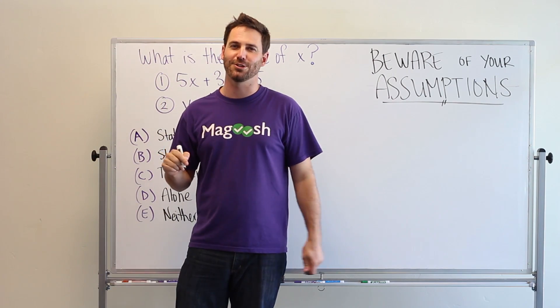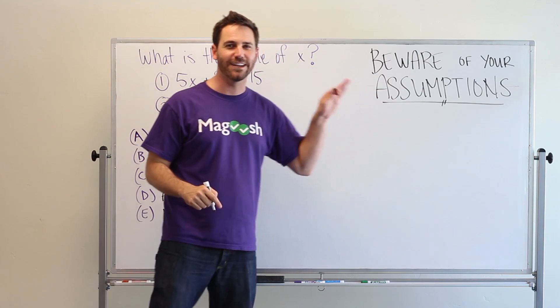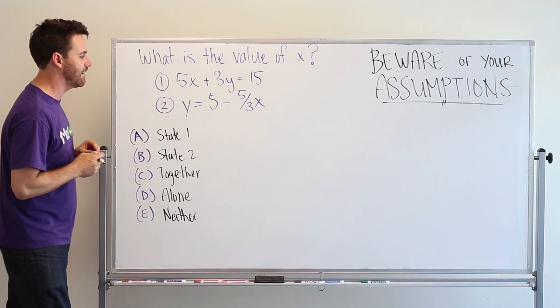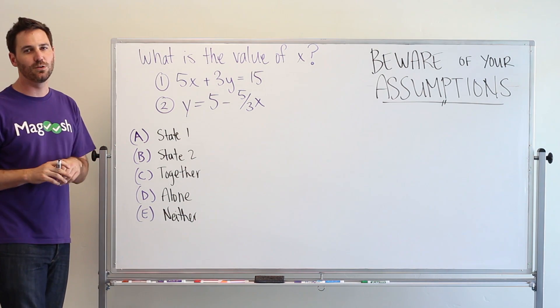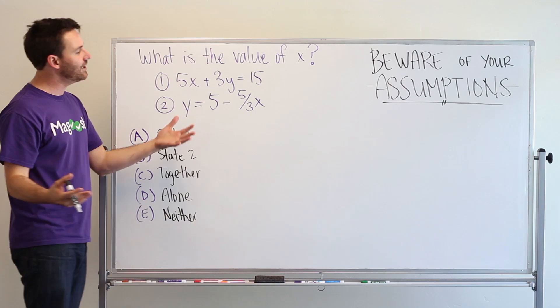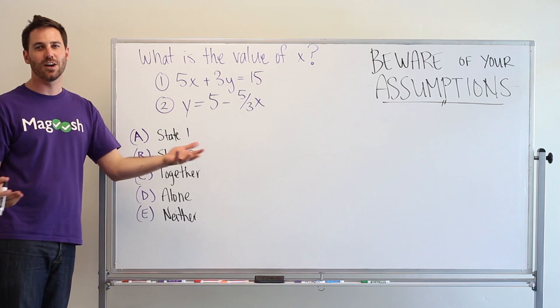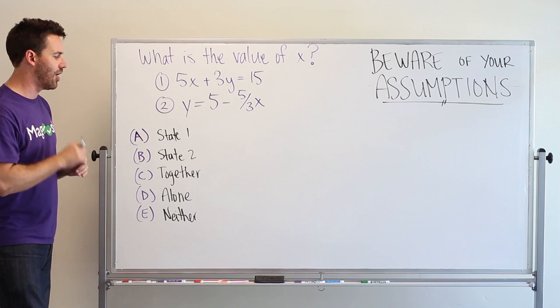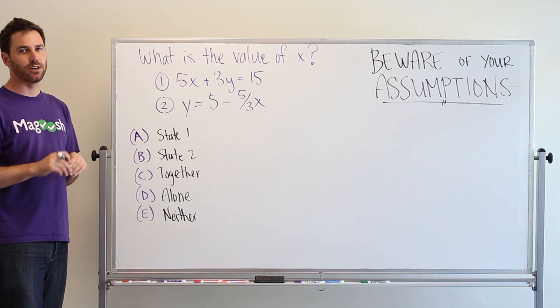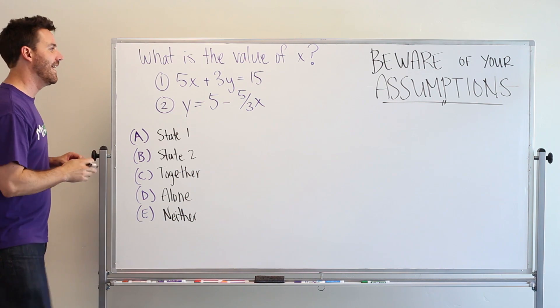But, you just got that question wrong because of assumptions. You're making too many assumptions. Yes, you have two variables, and yes, you have two linear equations. And usually, yes, that means you can figure out what the value of one of those variables are. But, let's work this problem and see why that's not true.